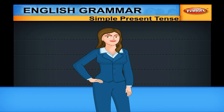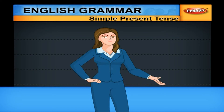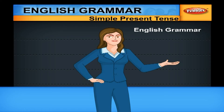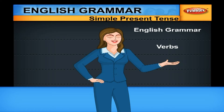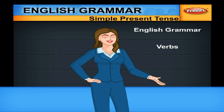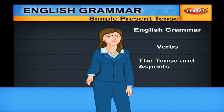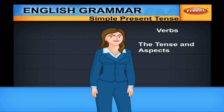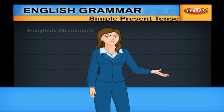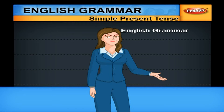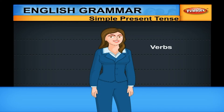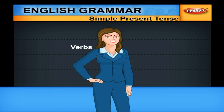Now, we go into the tenses and the aspects. What we intend to do is take up tense one after another, go into every aspect. We will first find out how that aspect is to be formed, and then find out in what situations we have to use that particular aspect. Let us begin with the present tense. Let us assume that an action that takes place in the present time is called present tense.